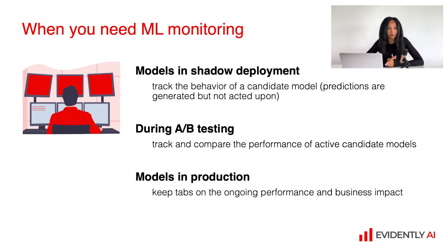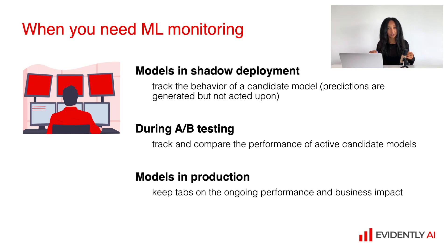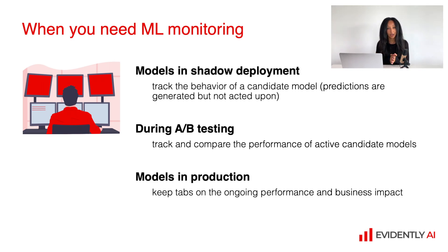Basically, we need to start caring about machine learning monitoring when we deploy machine learning models to production. However, there are two more scenarios where you might want to implement monitoring. First is models in shadow mode — cases where you actually generate model output but do not use it downstream in systems. You analyze it and later decide whether to deploy this model in production or not. And also A/B testing, because in this case you have several models generating outputs and you compare results from different models. It also makes sense to have monitoring because all the models are actually deployed in production.